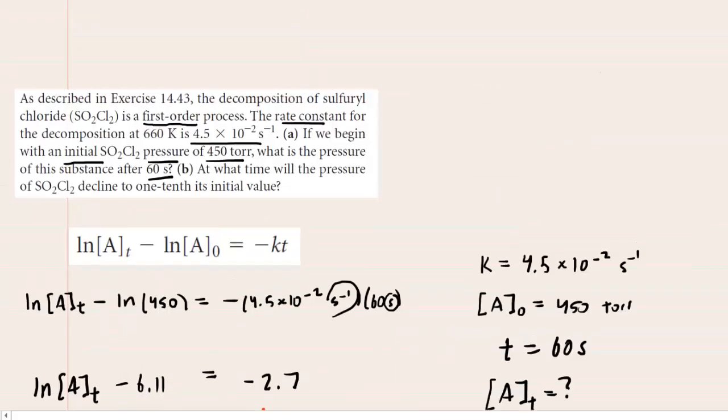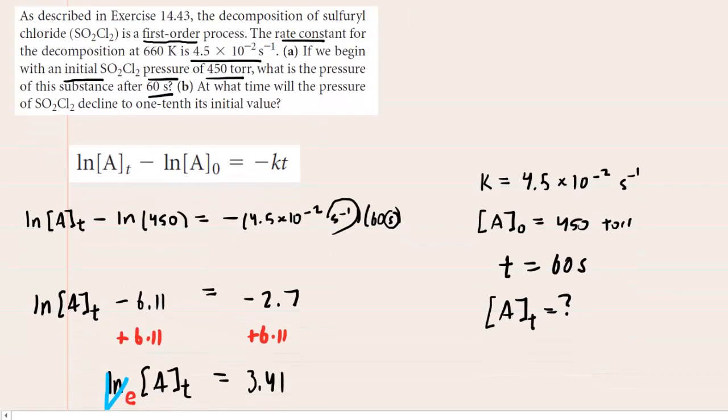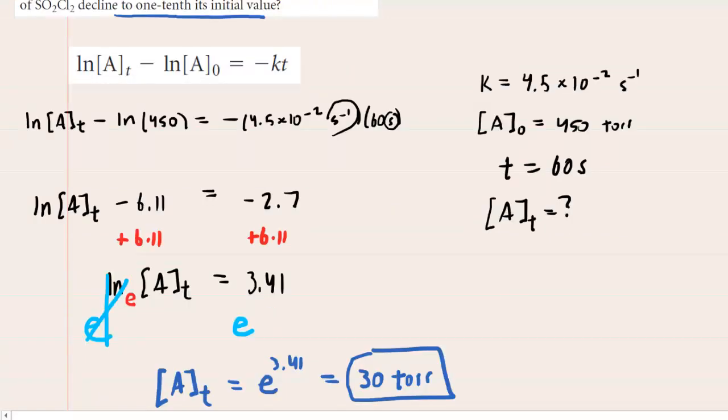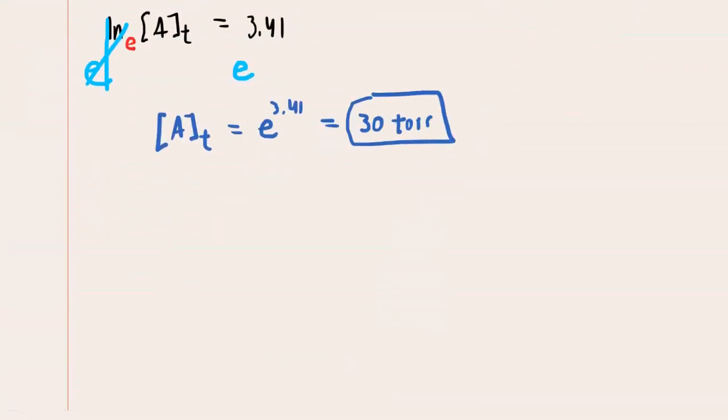In part B, we are asked to compute a time where the pressure declines to one-tenth its initial value. So let's try to understand what they mean by the pressure being one-tenth of its initial value.